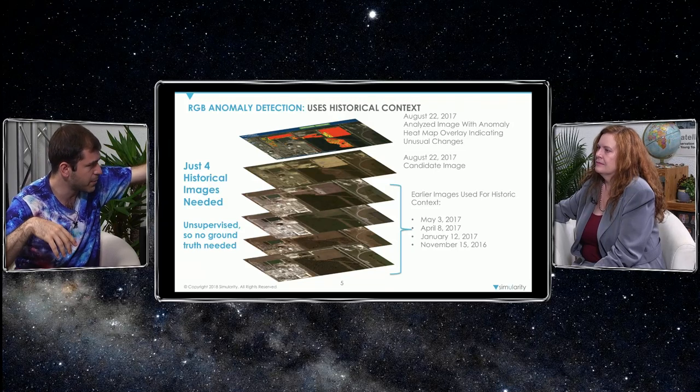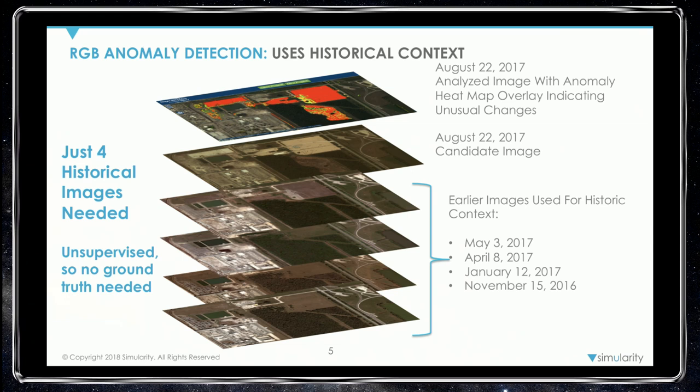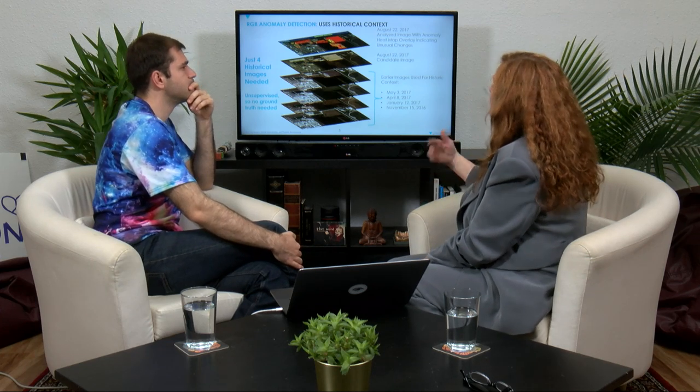It's similar to the medical industry — we look at all the bodily scans, a flag happens, and then a physician or medical analyst says 'great catch.' The geospatial analysts look at the red anomaly heat maps. Sometimes it's just a new parking lot. One interesting thing: if you've got an active parking lot — like a mall — we learn that having cars in that parking lot is totally normal. Even if it's different-colored cars on different days, we don't flag those as anomalies.